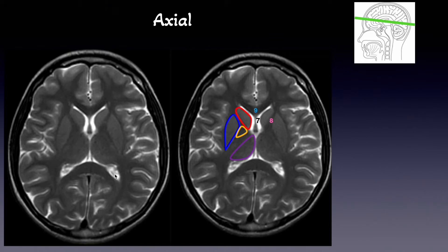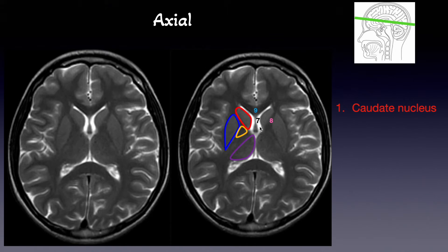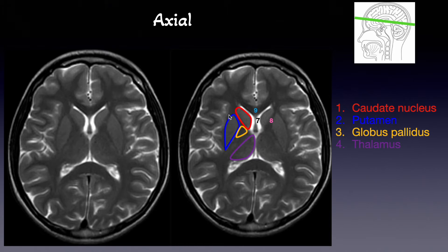The other structures we can see here with very good outlines — let's name them. Starting from the red one: that is what we call caudate nucleus, two of them, very close to the lateral ventricles. Next will be the putamen. Next structure will be the globus pallidus. And we can see here the thalamus. Globus pallidus and putamen together create the lentiform nucleus. The putamen and caudate nucleus together form the striatum.